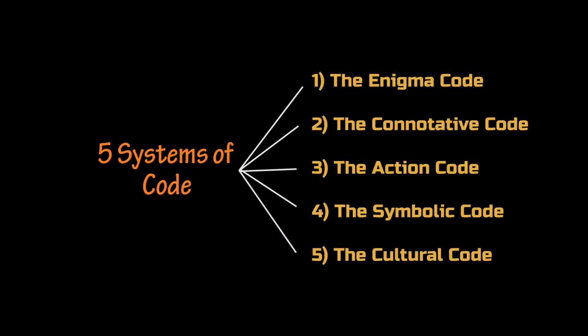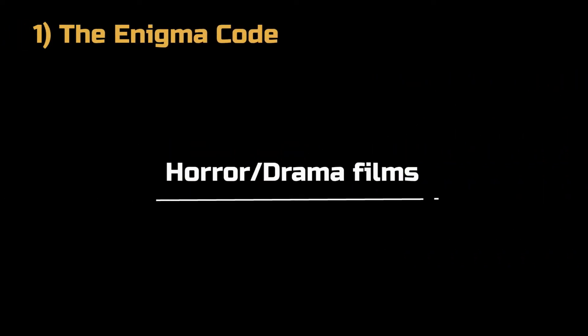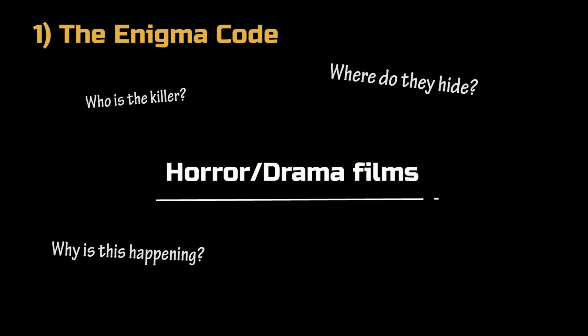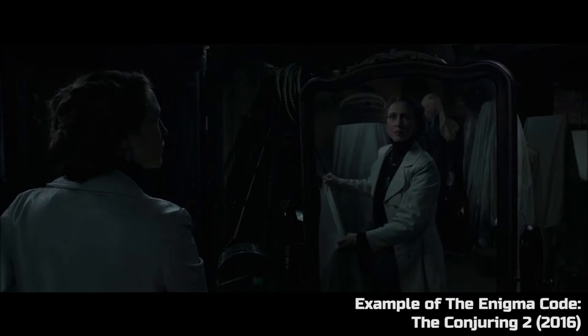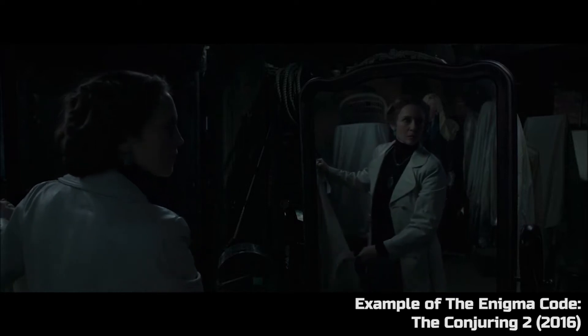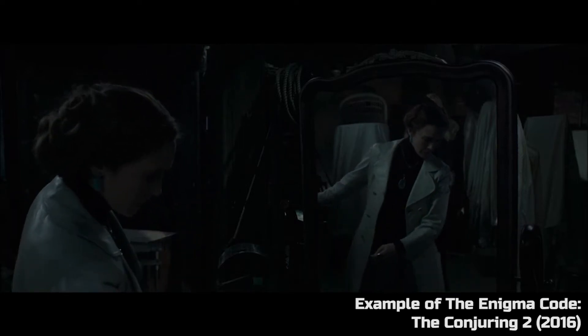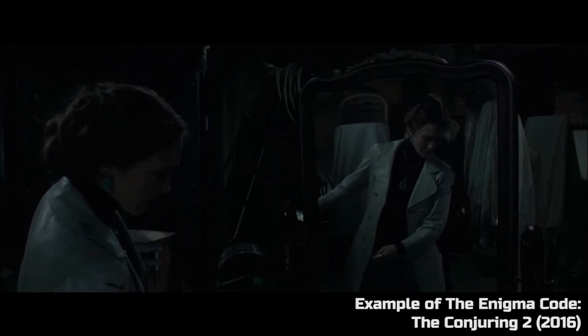Moving on, five systems of code are used in this theory. This is common in horror and drama films. It allows the audience to question certain aspects of films. This is the opening scene of The Conjuring 2, which contains the enigma code because it is full of mystery.